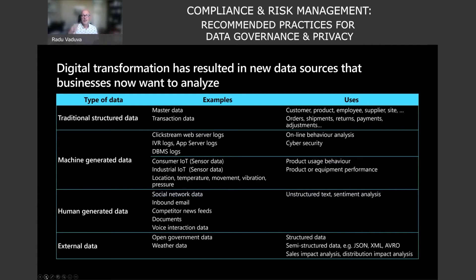There's also the concept of structured versus unstructured data. Traditional structured data includes transactional and master data — employee data, returns, payments, and orders. Machine-generated data is now another category — including IVR logs from interactive voice response systems, all collected and analyzed. Human-generated data includes email, documents, news feeds, social network data, voice interaction data, and unstructured text or sentiment analysis. Then there's external data: anything taken in as a feed that augments your existing systems and helps deliver services to your employees and business.